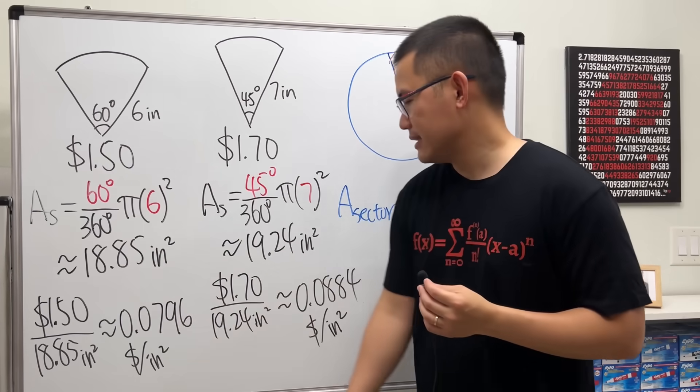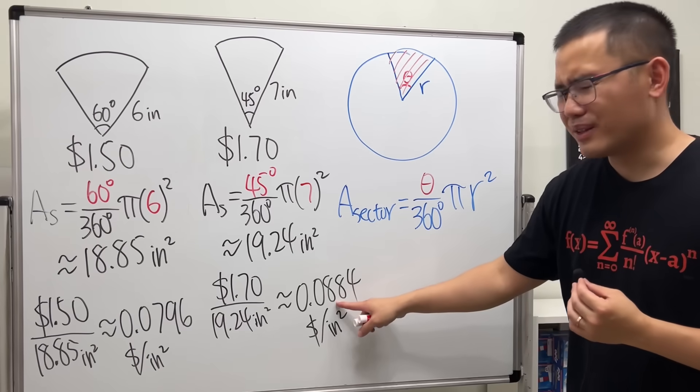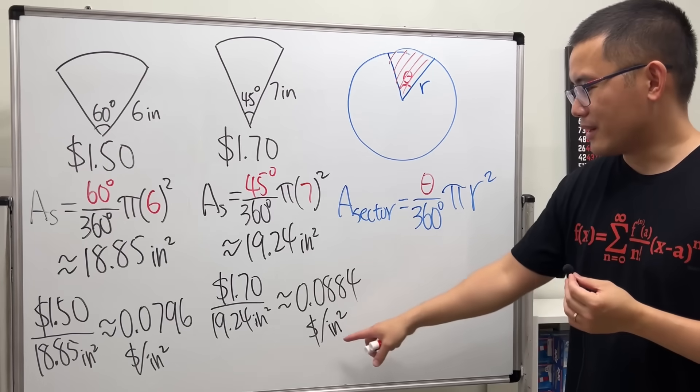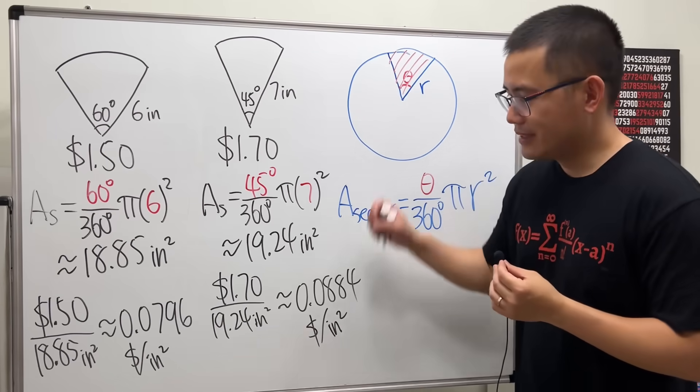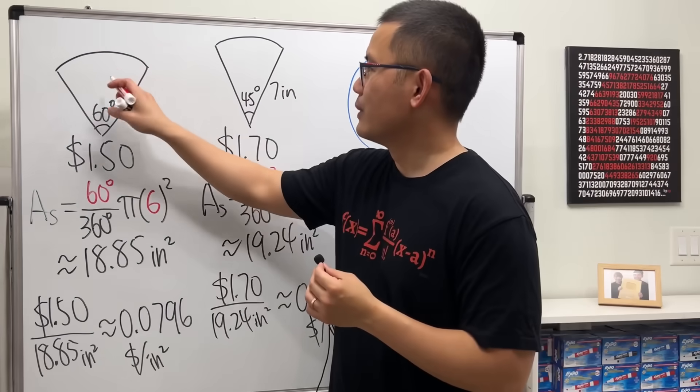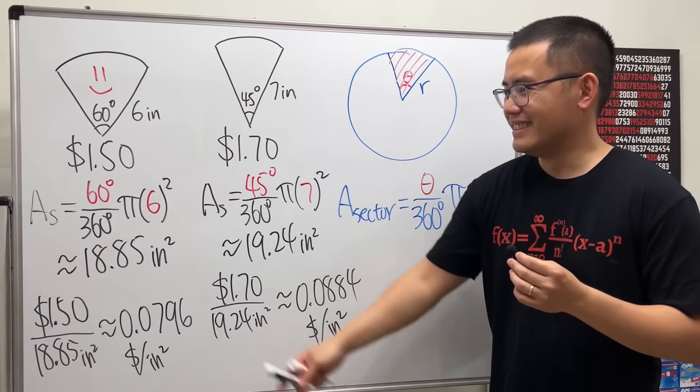So this is about like eight cents per inch squared, and this right here is about almost nine cents per inch squared. So which one is a better deal? The first one. So I'll put a little happy face here. Yep, that's it.